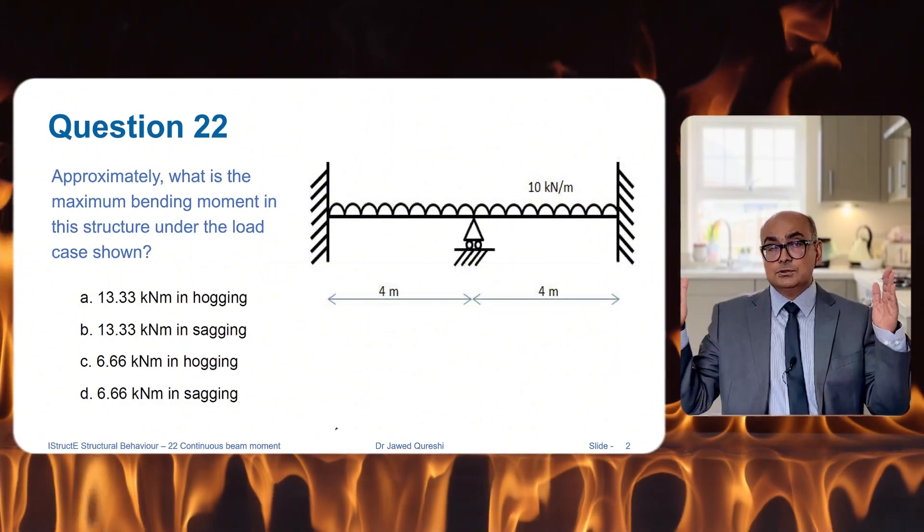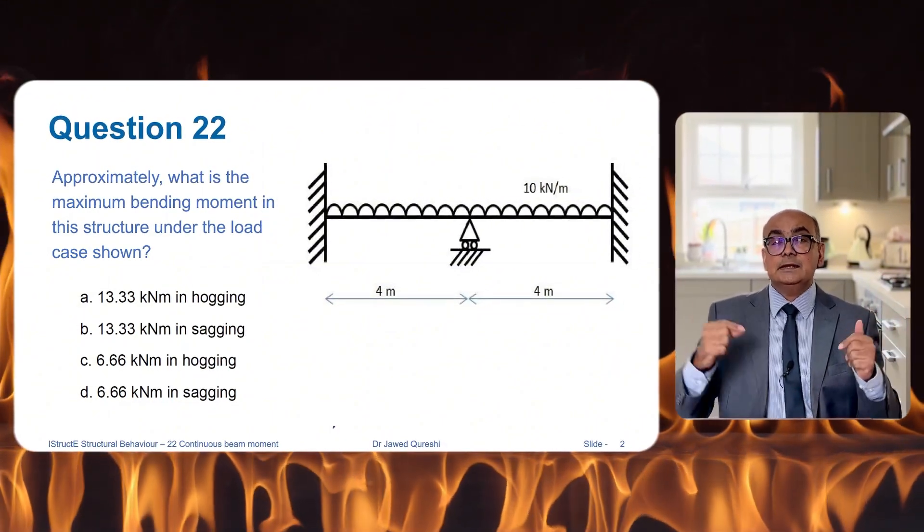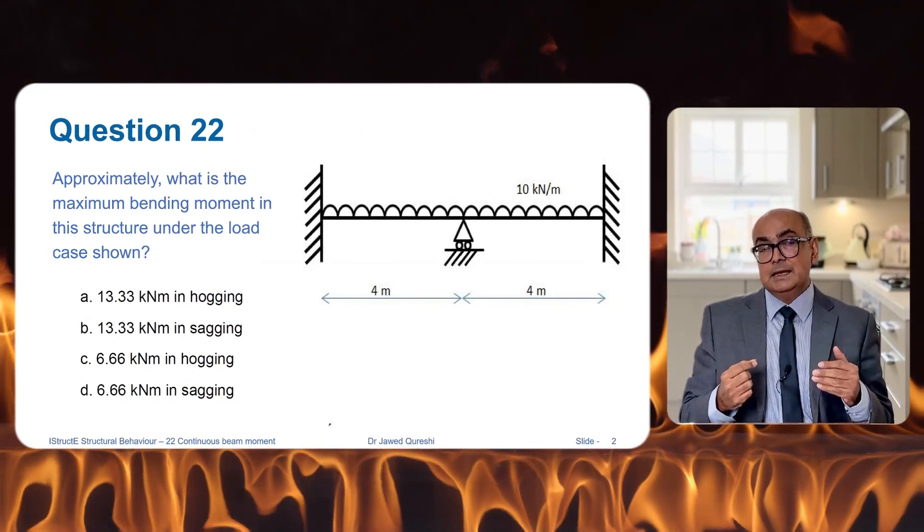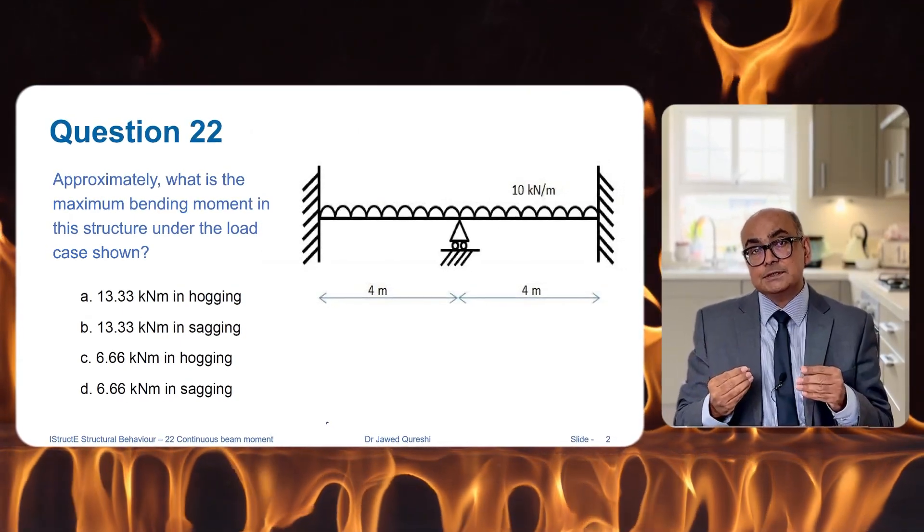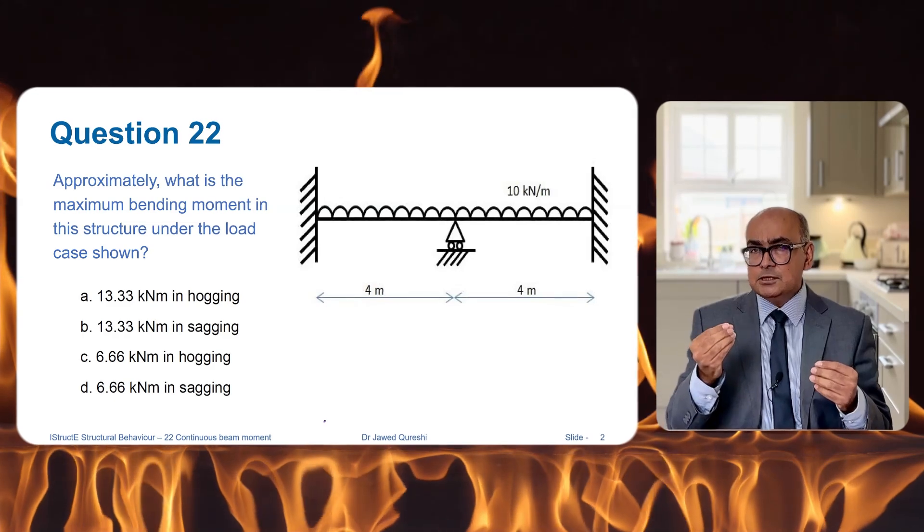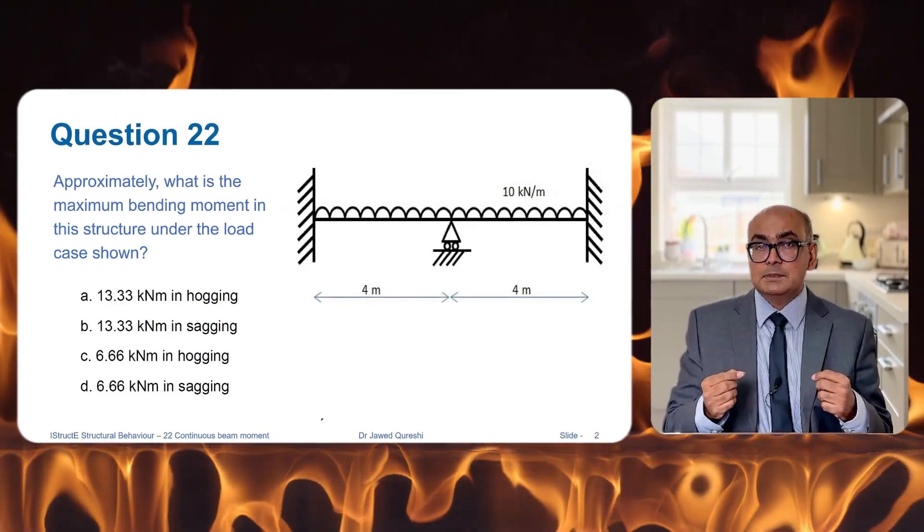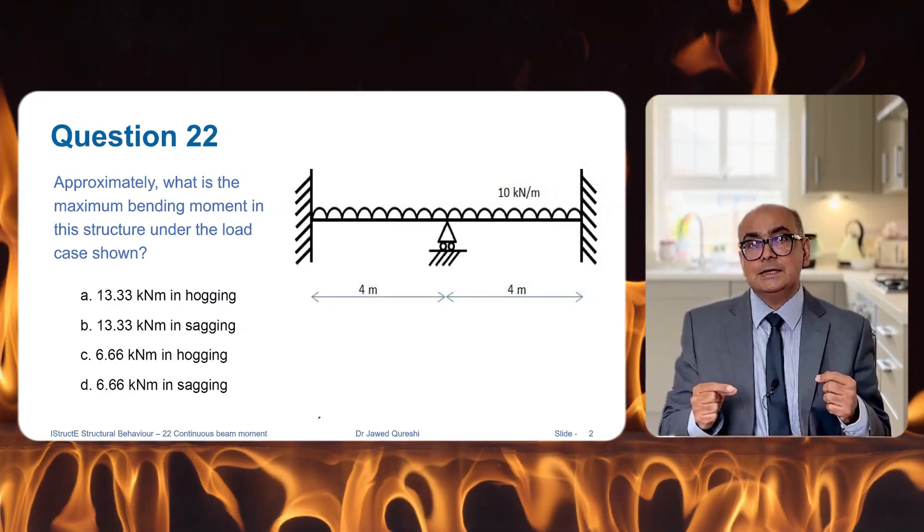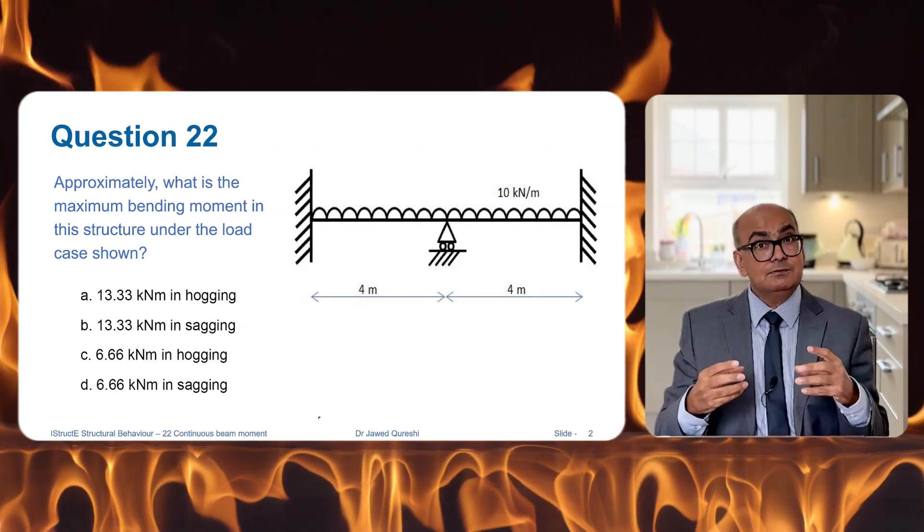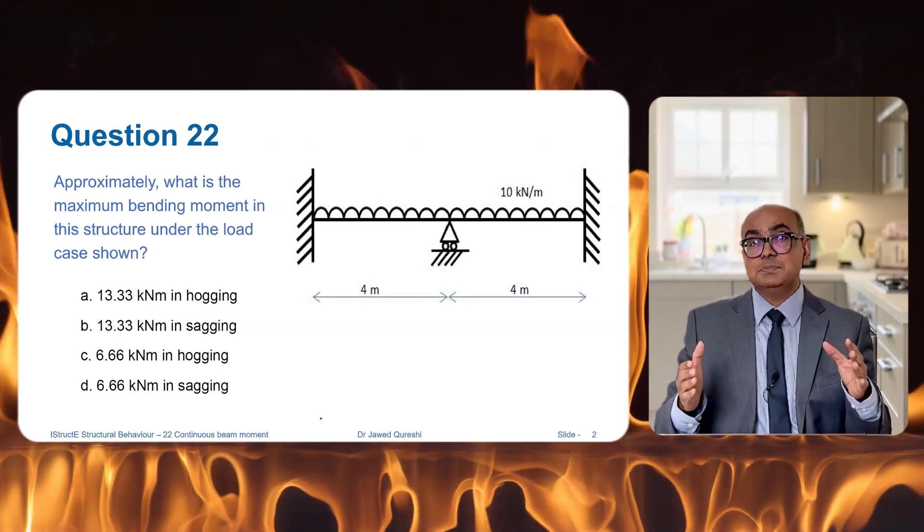It's got two fixed supports at the end and one prop or a roller in the middle, and there are four options to choose from. Can you find out quickly what's the bending moment with simple calculations? I want to give you a hint here: consider this beam as